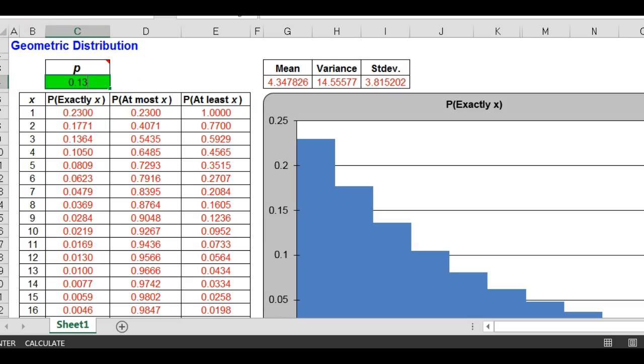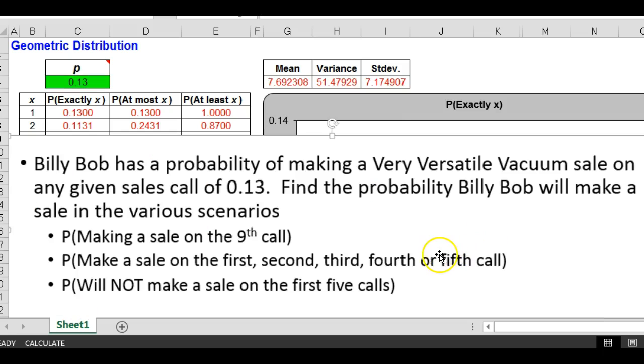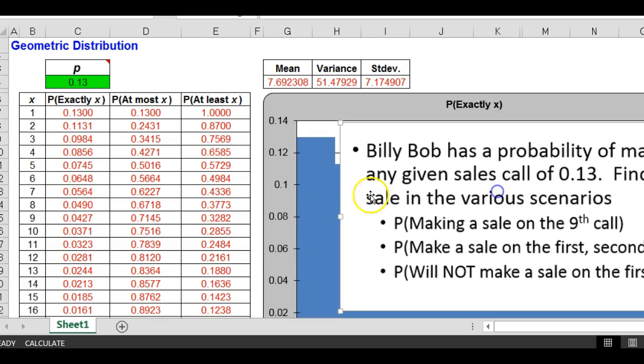Now let's look at the questions they ask us. The first question was, what is the probability of making a sale on the ninth call, which is really, I should have said, the first sale. Okay, this is what you're assuming. On the ninth call, his first sale will be on the ninth call, the probability would be .0427.